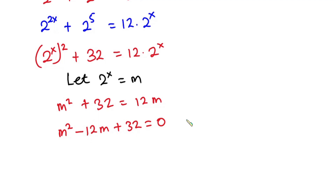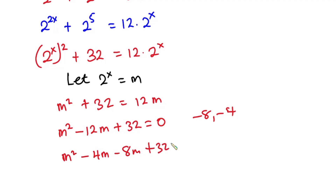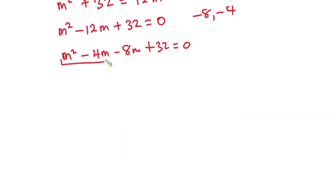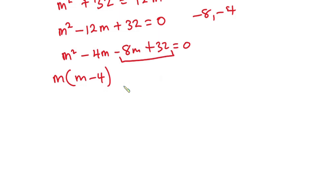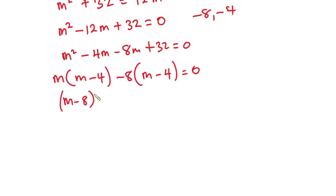I need to find two values that multiply to give 32 but sum to negative 12, and the values are negative 8 and negative 4. So this equation can be written as m squared minus 4m minus 8m plus 32 equals zero. Taking m out from the first two terms gives m times (m minus 4), and taking negative 8 out from the last two terms gives negative 8 times (m minus 4), equal to zero.